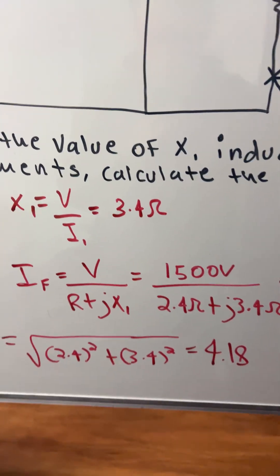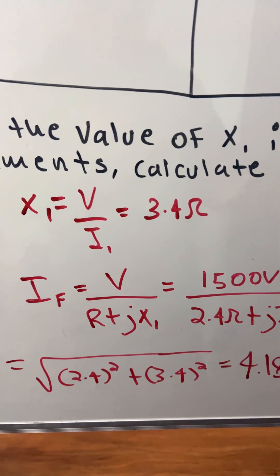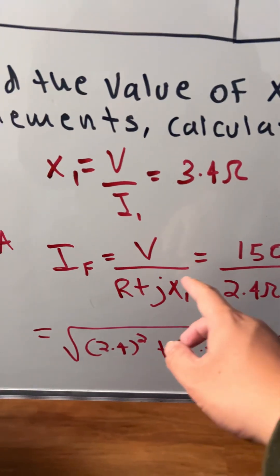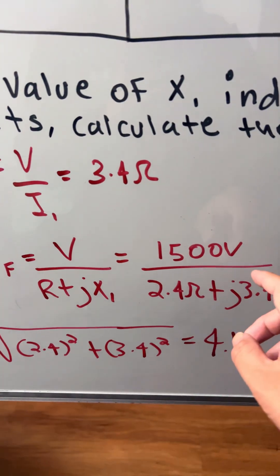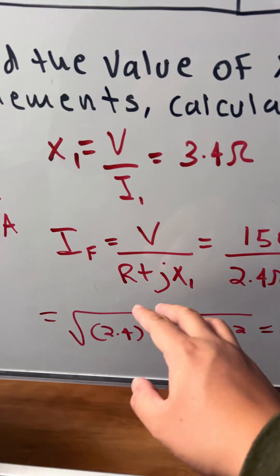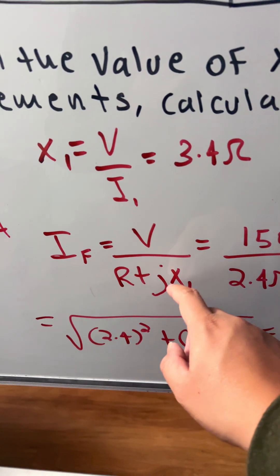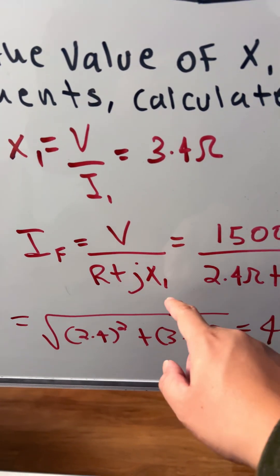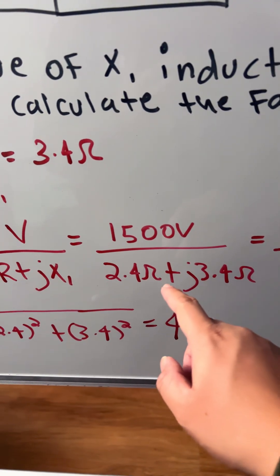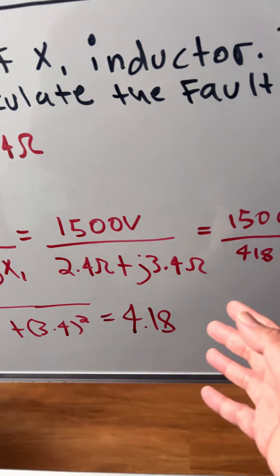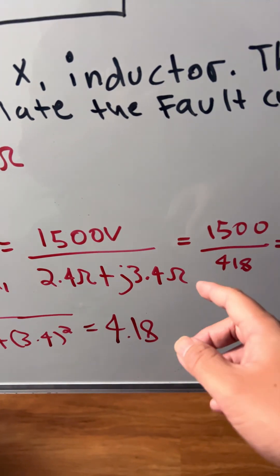Now we're going to solve for the fault current. So we have the voltage 1500, and then we have the impedances: the resistance plus the inductance, so 2.4 ohms plus j3.4 ohms.